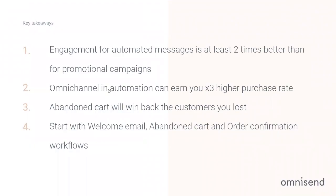Key takeaways of this session: automation open rates are much higher compared to email campaign open rates. Customers are more engaged with automation messages — that's why you should start with automation and then continue to promotional campaigns. Using omnichannel can earn you three times higher purchase or order rate. Start with email and SMS blocks in one sequence, then add push notification or Facebook Messenger and watch your revenue grow.